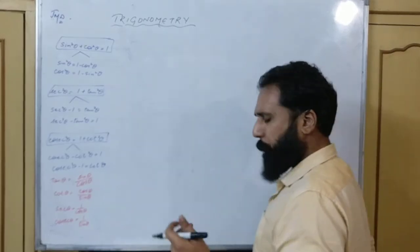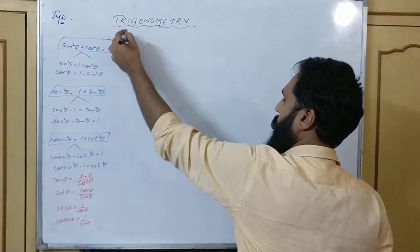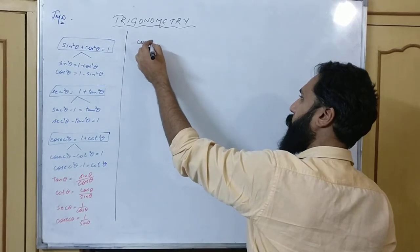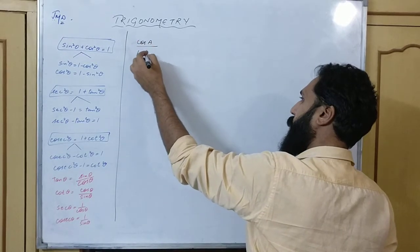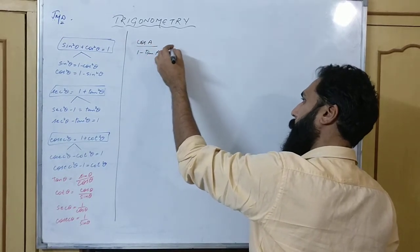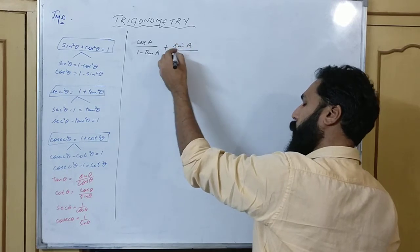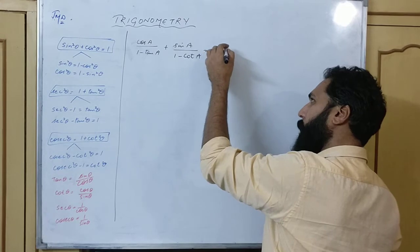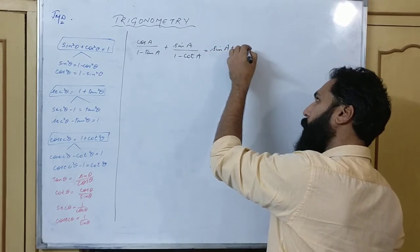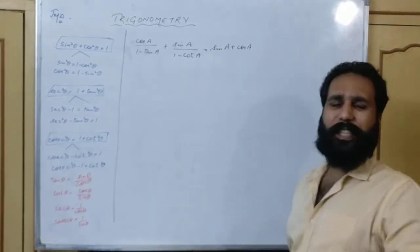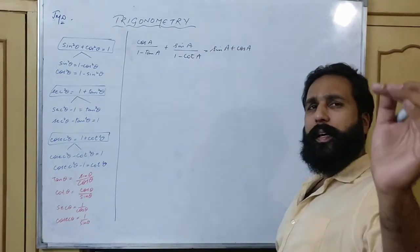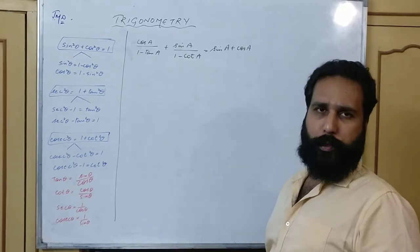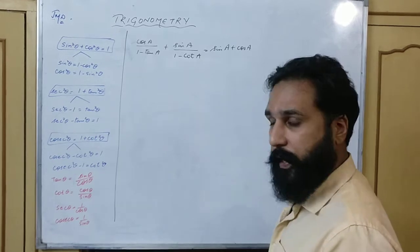First question, which I frequently see in the paper. The question is: cos A over (1 minus tan A) plus sin A over (1 minus cot A) is equal to sin A plus cos A. As you get the question, you will learn all things about it. Your attention is important.